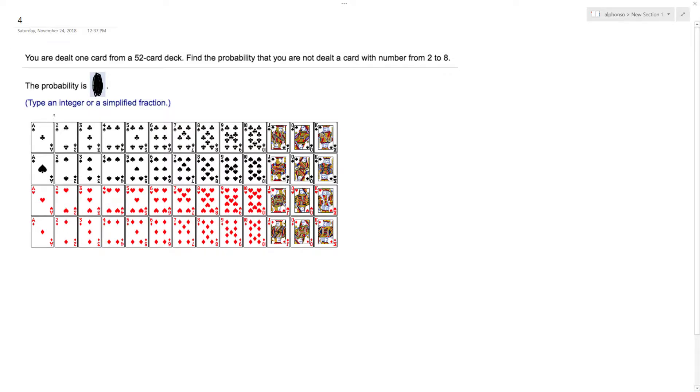So 2 to 8 is gonna comprise of these cards. So that's 1, 2, 3, 4, 5, 6, 7. So that's 28 out of 52 cards.